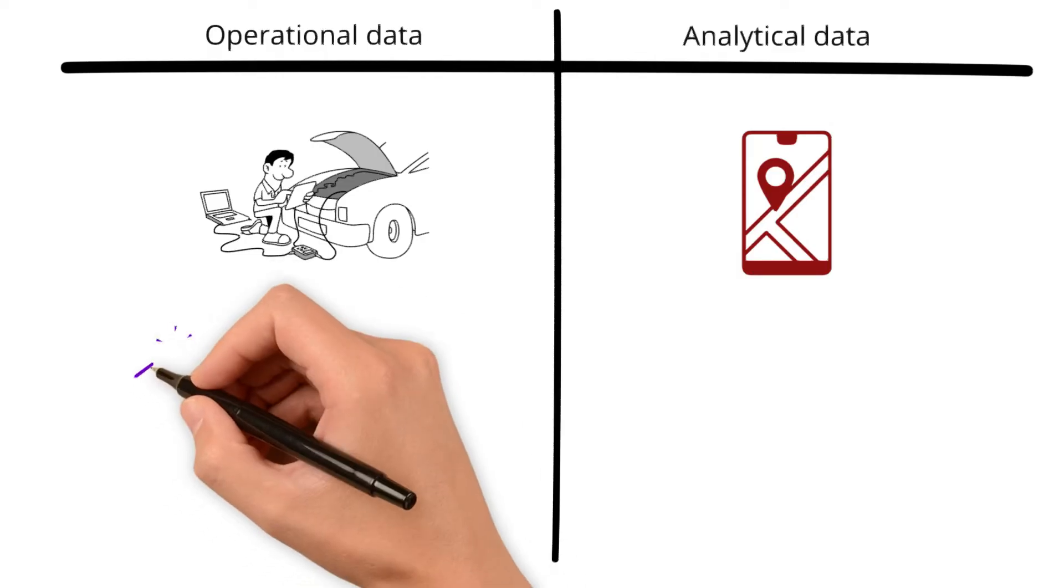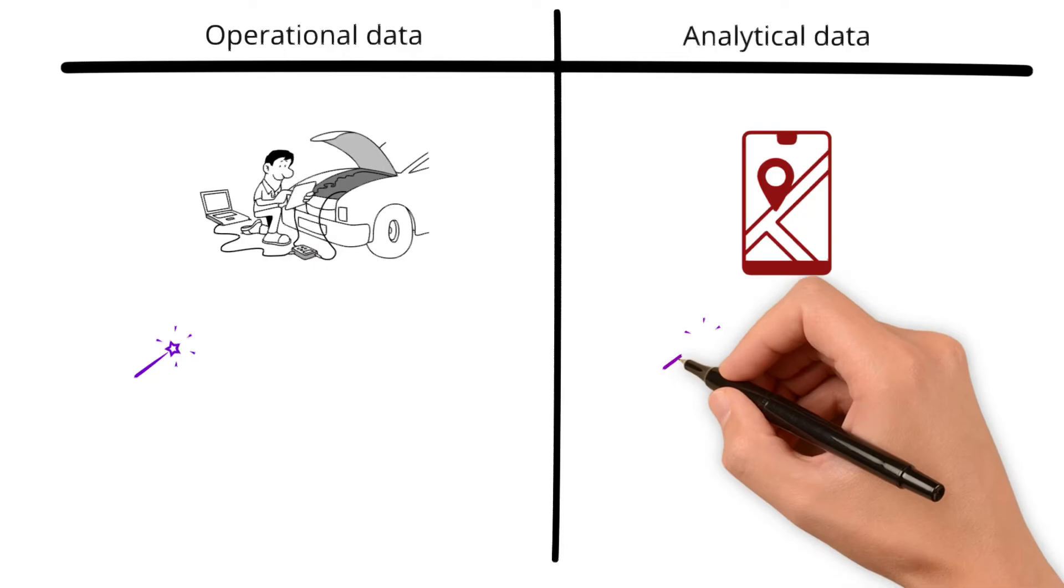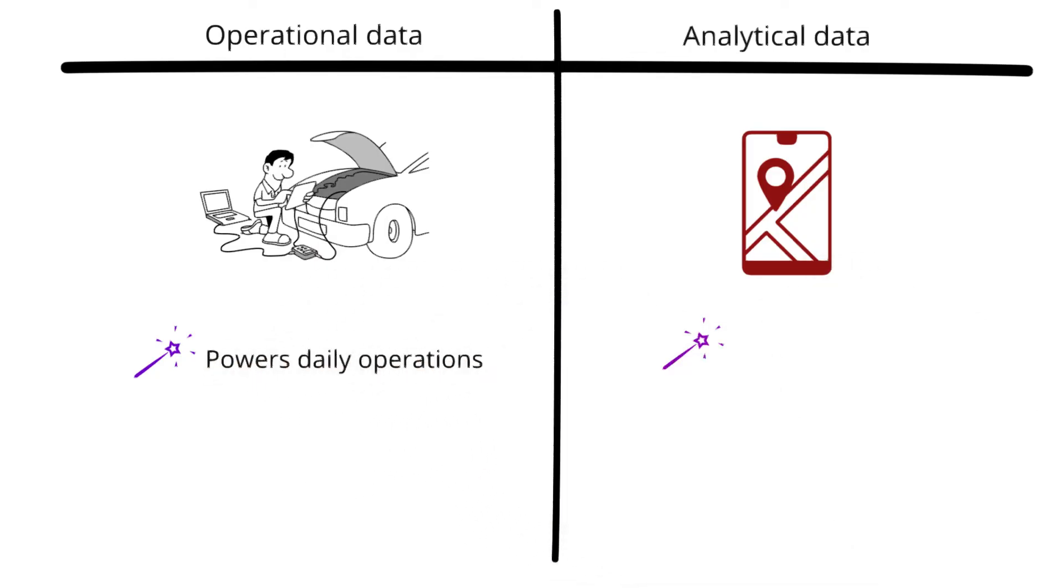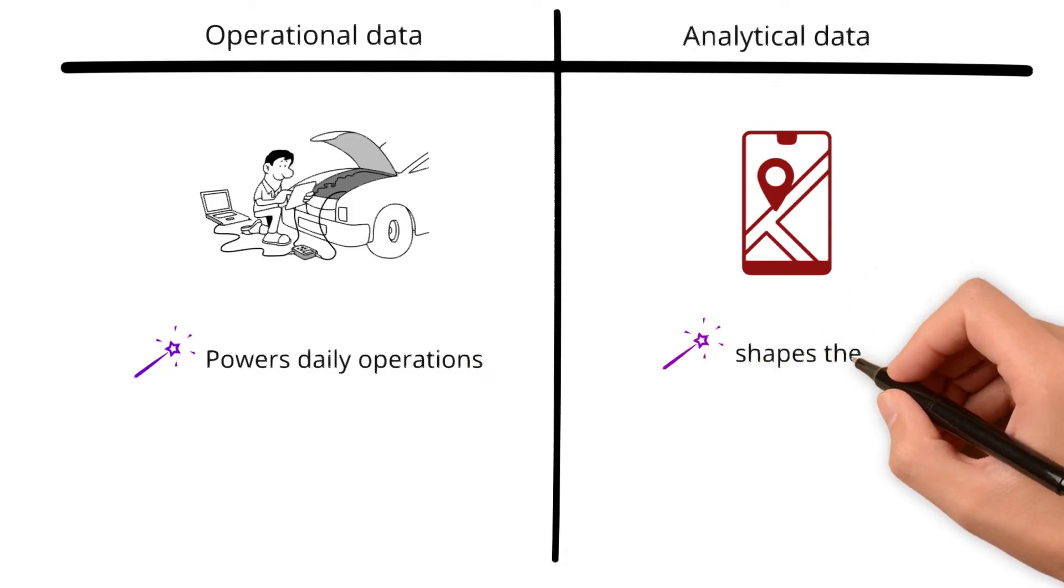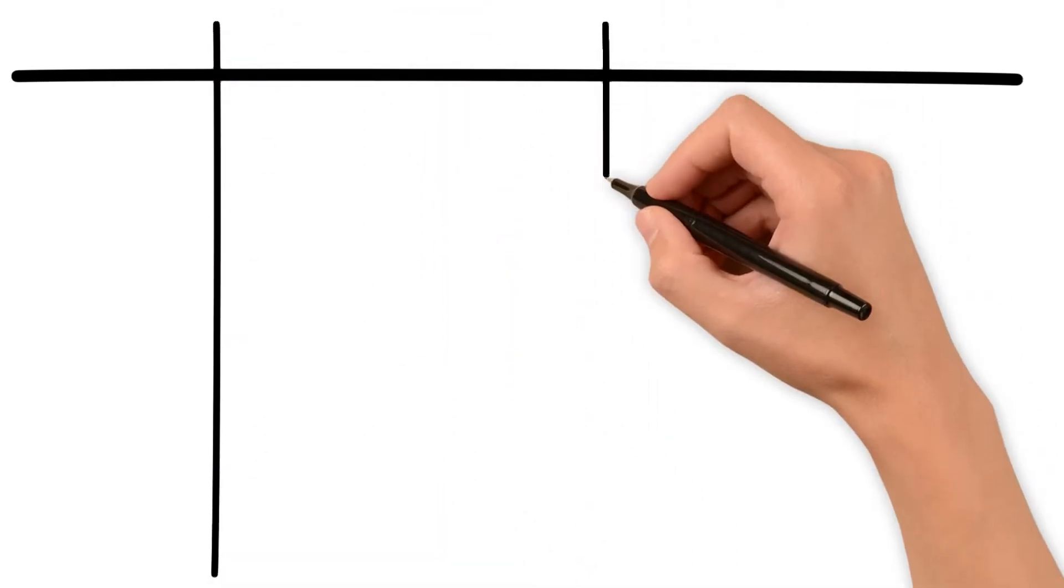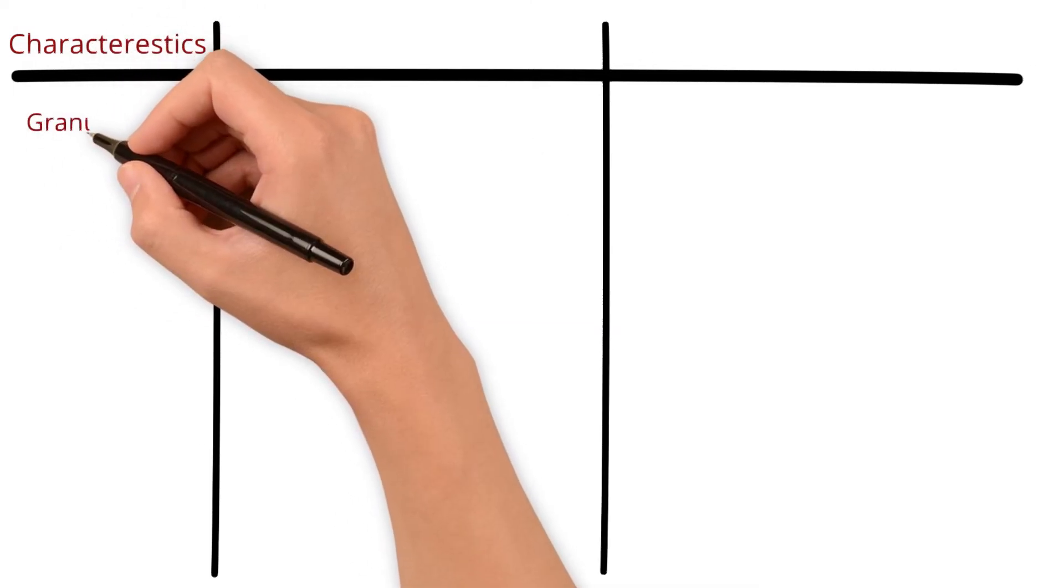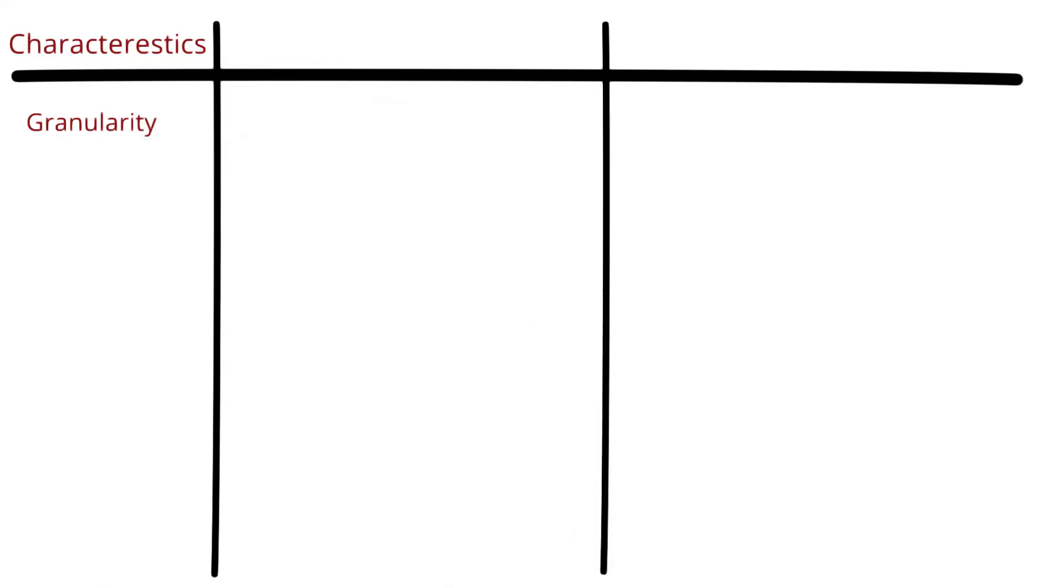So, we need both operational and analytical data because one powers daily operations while the other shapes the future. Now that we have clarified their purposes, stay tuned as we explore the next nuance in the differences in terms of their characteristics. The granularity or level of detail of operational data is highly detailed.